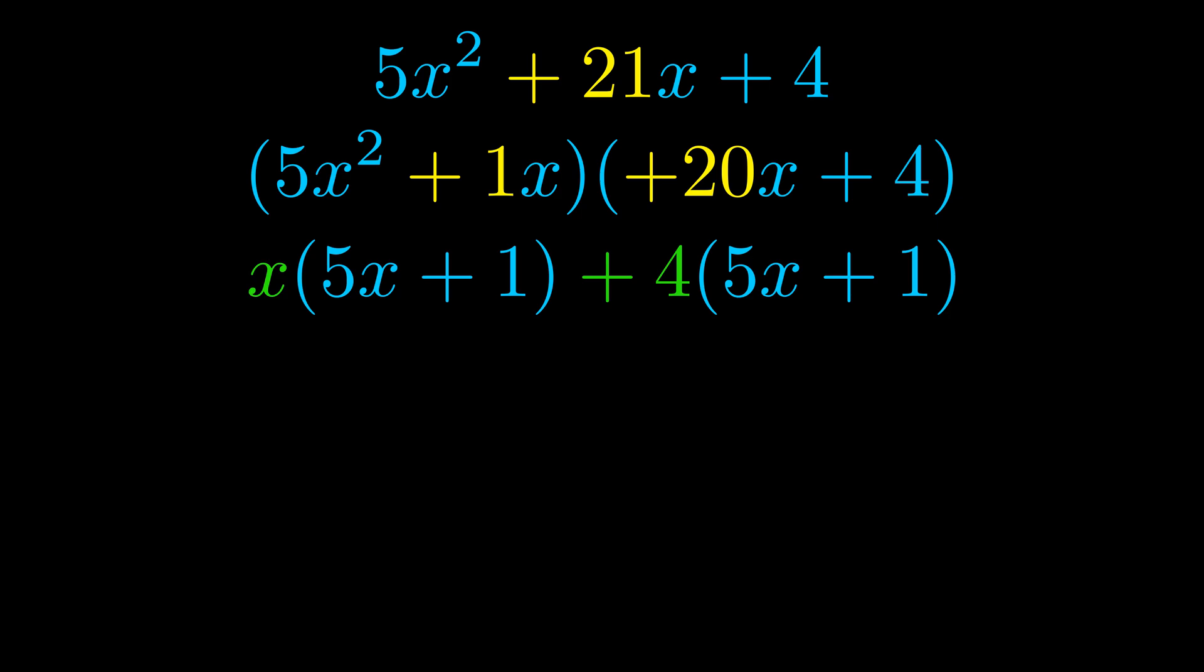Notice also how what remains inside of the parentheses is the same in both cases. The blue values are the same. Those blue values will become one of our factors and we will combine the two green values, the GCFs that we pulled out, to get the other one. And that is our fully factored equation.